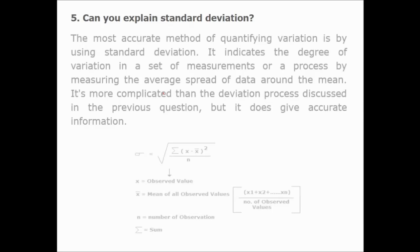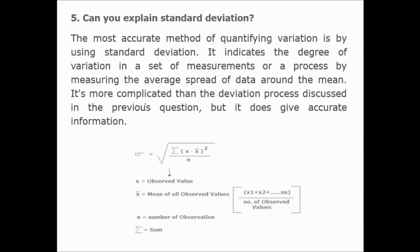Can you explain standard deviation? The most accurate method of quantifying variation is by using standard deviation. It indicates the degree of variation in a set of measurements or a process by measuring the average spread of data around the mean. It is more complicated than the basic deviation measures discussed, but it does give accurate information.